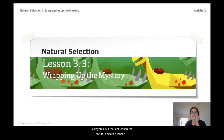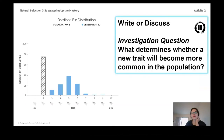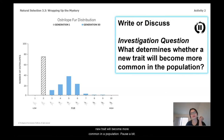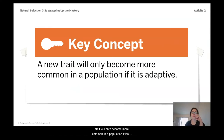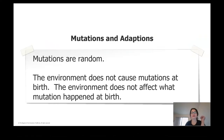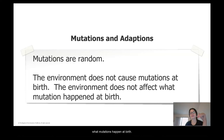This is the last lesson for natural selection — lesson 3.3: wrapping up the mystery. Let's think back about the ostrilopes we saw earlier. What determines whether a new trait will become more common in a population? The answer is one of our key concepts: a new trait will only become more common in a population if it's adaptive. Mutations are random — the environment does not cause mutations at birth and does not affect what mutations happen.